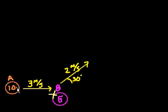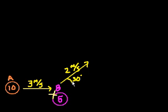We have ball A, and it's moving — these numbers are the mass of the balls. This is a 10 kilogram ball, and it's moving to the right at 3 meters per second. And then it hits ball B, which is a 5 kilogram ball. Ball A kind of ricochets off of ball B and gets set onto a new trajectory — instead of going right, it's going at a 30 degree angle to horizontal at 2 meters per second. The question is: what is the velocity of ball B?